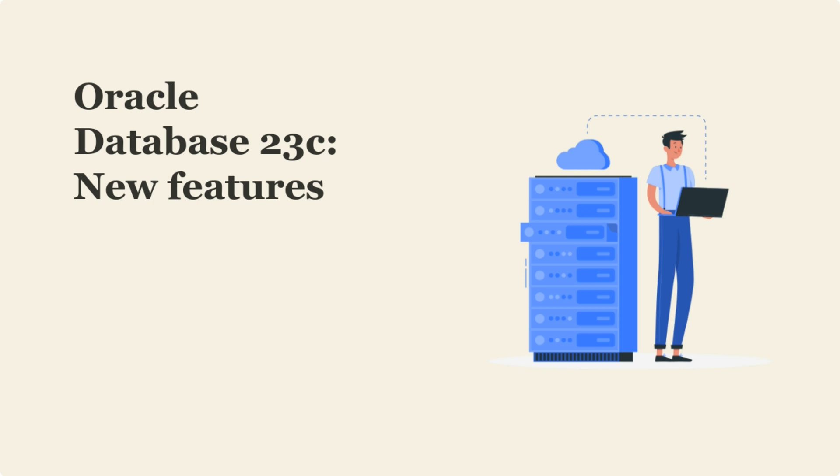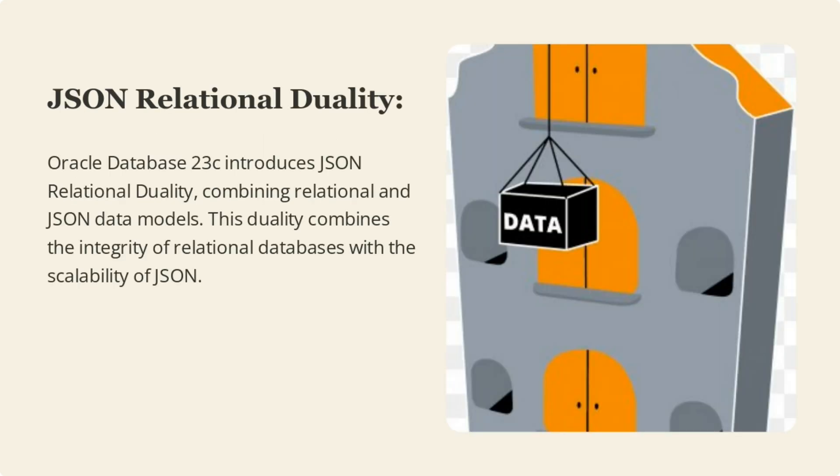Oracle Database 23c introduces JSON Relational Duality, which combines the integrity of relational databases with the scalability of JSON. This duality brings together the best of both worlds, allowing for seamless integration of relational and JSON data models, providing enhanced flexibility and performance for modern applications.